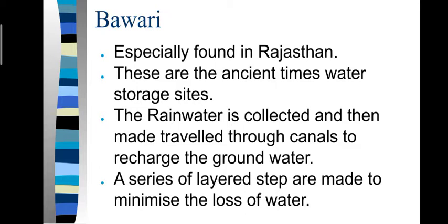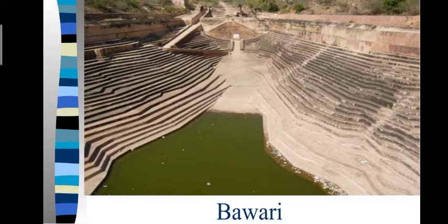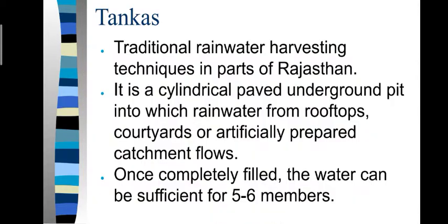Boweries are especially found in Rajasthan. These are ancient water storage sites where rainwater is collected and made to travel through canals to recharge groundwater. A series of layered steps are made to minimize water loss. The diagram depicts a Bowery.